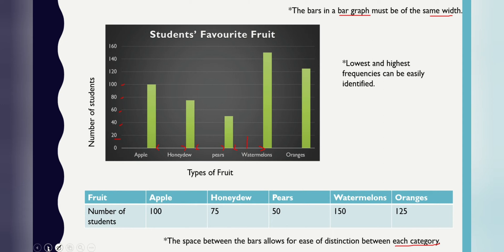An advantage of a bar graph is that the lowest and highest frequency can be easily identified. If you see that, watermelon is definitely the highest, and the lowest is pears. A disadvantage is that if the frequency scale does not start with zero, the displayed data may be misleading.